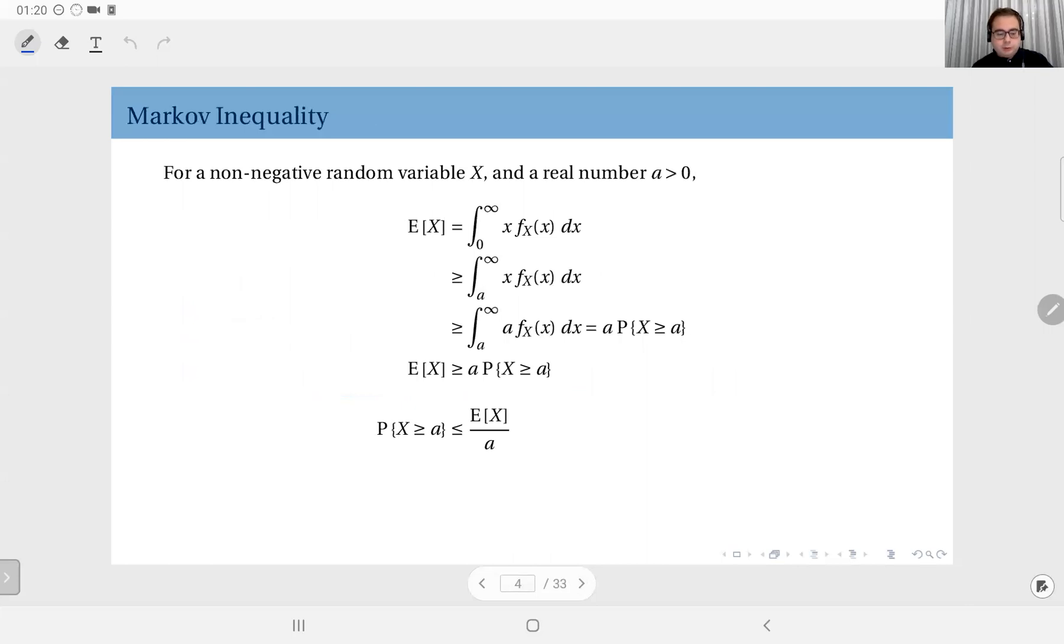Let's start with Markov inequality. This is defined for non-negative random variables. This is important and sometimes forgotten - people sometimes tend to try to use Markov inequality for general random variables, which is a mistake. You should be careful about when to use Markov inequality; this is valid only for non-negative random variables. We have a real number that is positive, and we are interested in putting a bound on the probability that our random variable exceeds this value a. We do not have the distribution and therefore cannot compute this probability, but we would like to obtain an upper bound on this probability.